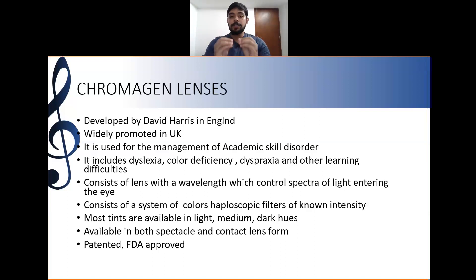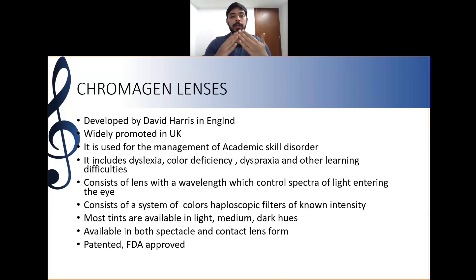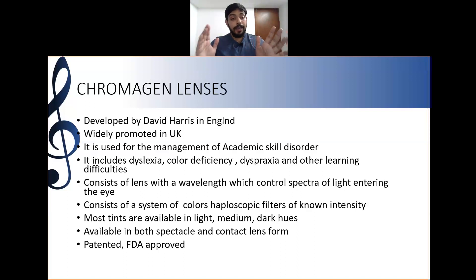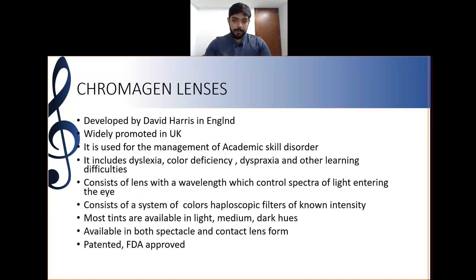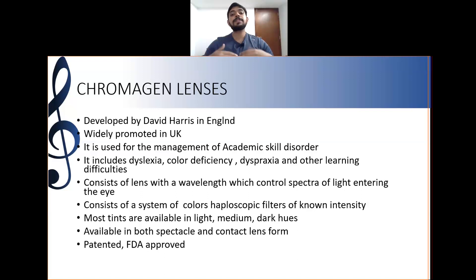Chromogen tints are available in light, medium, and dark hues, available in both spectacle and contact lens form, and are patented and FDA approved. They address deficiencies by supplementing the missing wavelength. Conditions managed include dyslexia, color deficiency, dyspraxia, and various learning disorders.